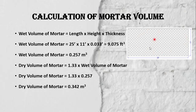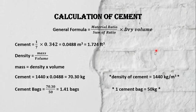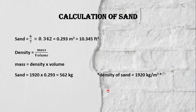If you want to convert it into bags, divide by 50, because one cement bag contains 50 kilograms of cement. Now calculate the quantity of sand: divide 6 parts of sand by the sum of ratios, multiplied by the dry volume.